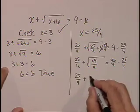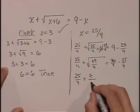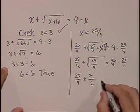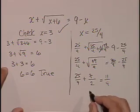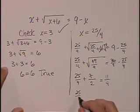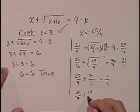Thankfully, we can do that. The square root of 49 is 7, and the square root of 4 is 2, so it's just 7 halves. It's equal to 11 fourths. 7 over 2 is the same thing as 14 over 4. We see that we're running into trouble here.